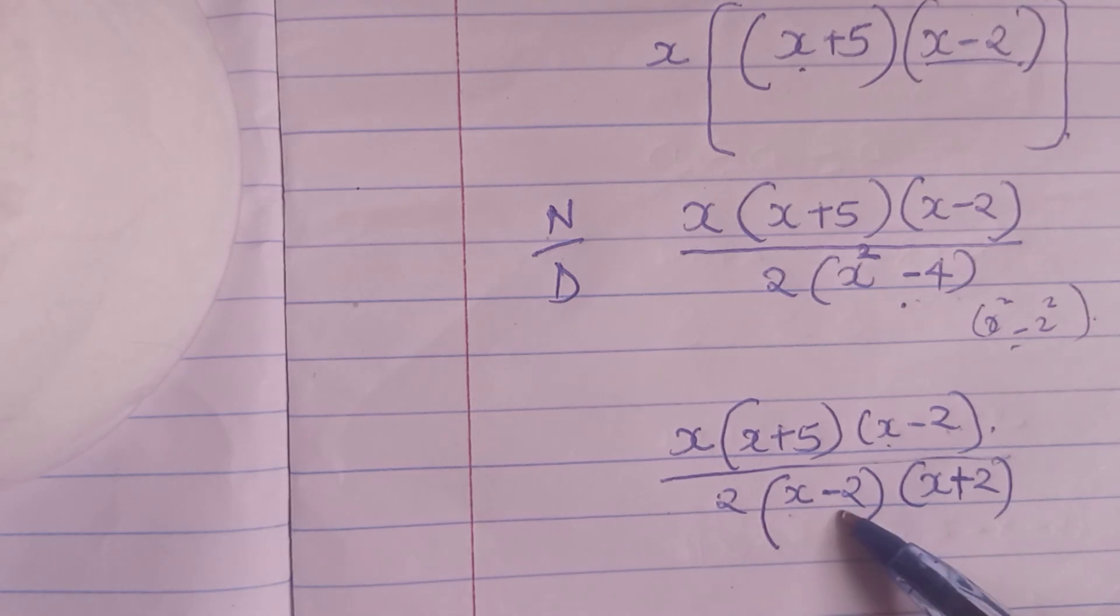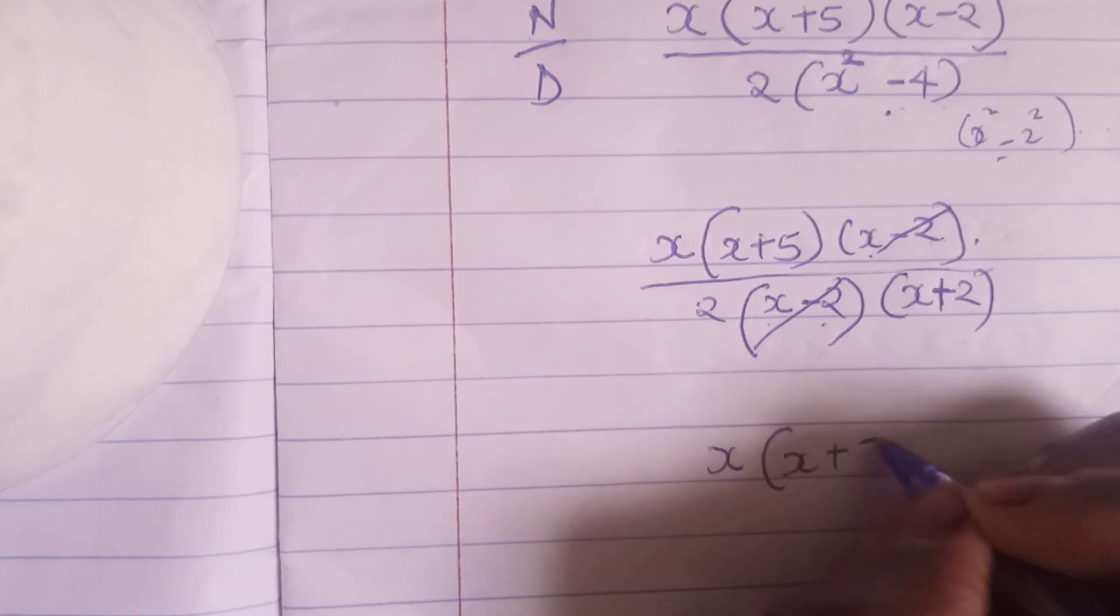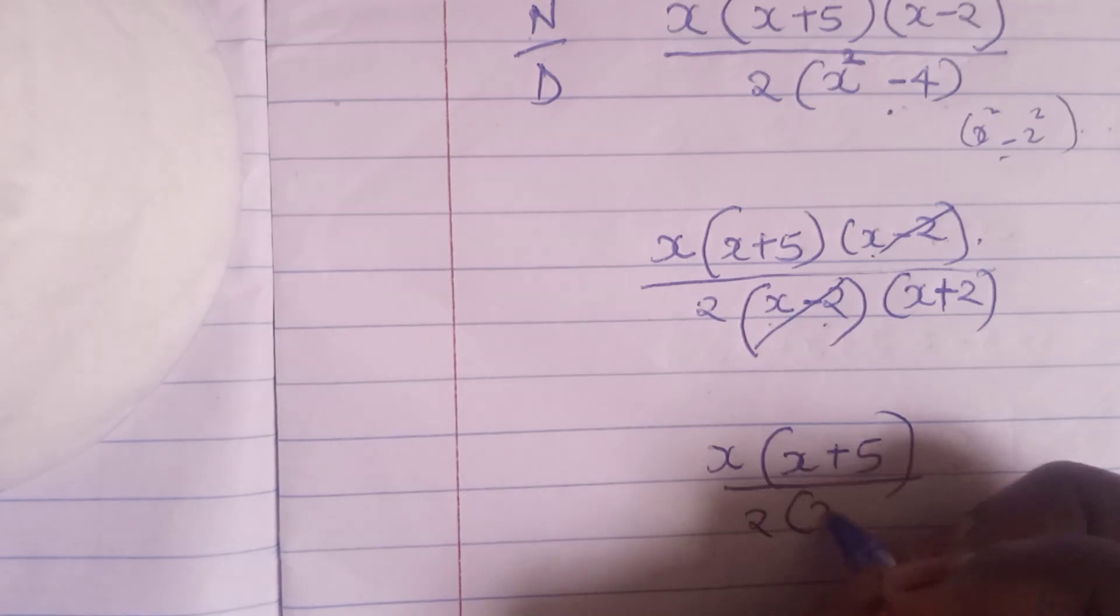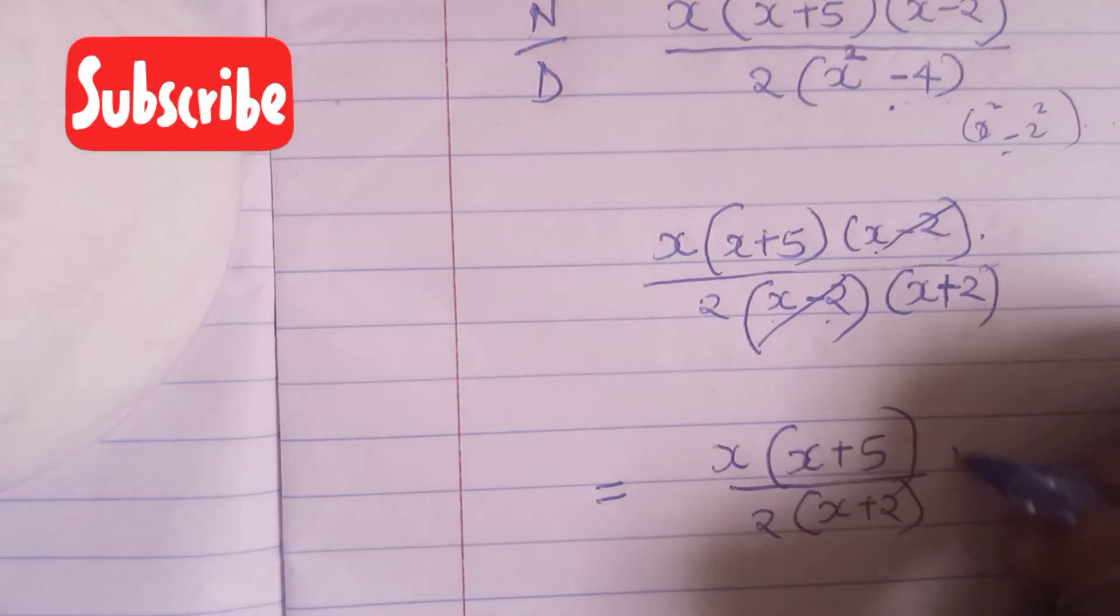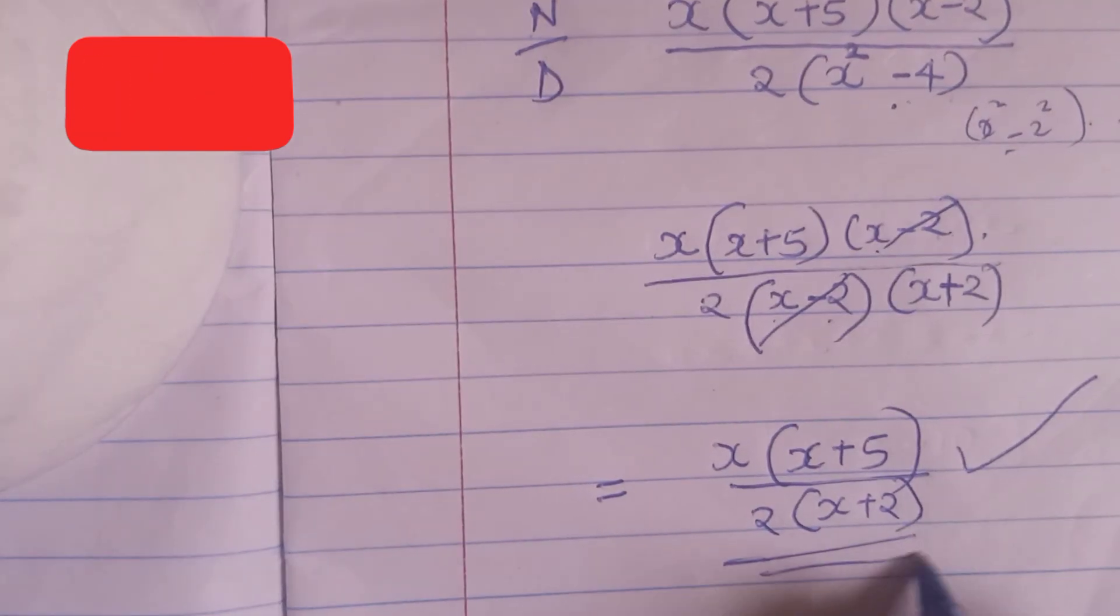So if you can check, x minus 2 on our numerator is similar to x minus 2 on our denominator. So this will cancel. And I will remain with x into x plus 5 divided by 2 into this x plus 2. And this is our simplified form. We cannot simplify it further. So this is the correct solution to our algebraic equation. We have simplified it further. And you deserve a mark. So this is the solution.